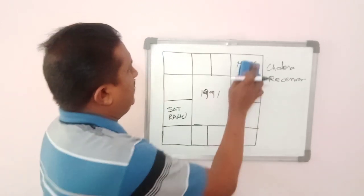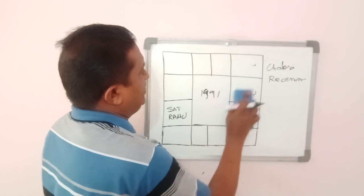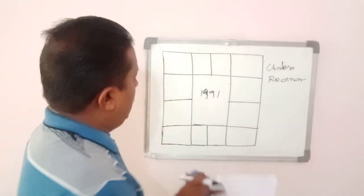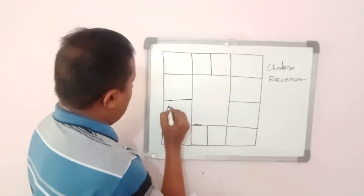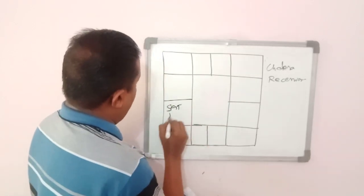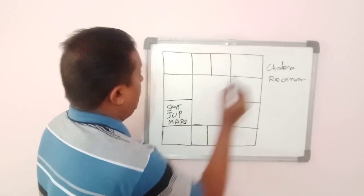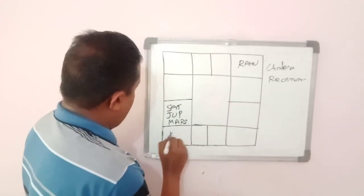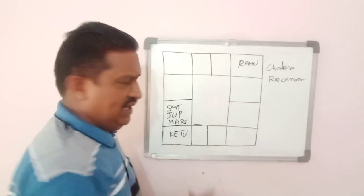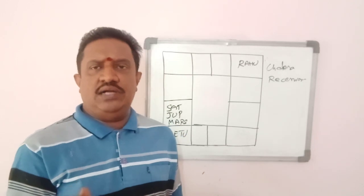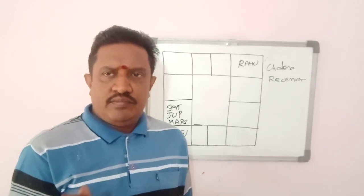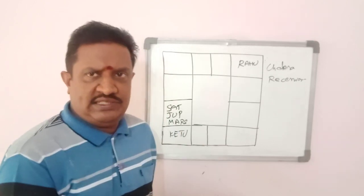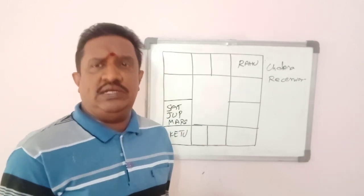Looking at this history of epidemics due to Saturn's Capricorn transit, let us now analyze the current situation. Currently, Saturn is in Capricorn along with Jupiter and Mars. Rahu is in Gemini in Ardra Nakshatra, and Ketu is in Mula Nakshatra. Rahu's transit in Ardra Nakshatra gives very negative results — spread of epidemics and fear prevailing among the masses.